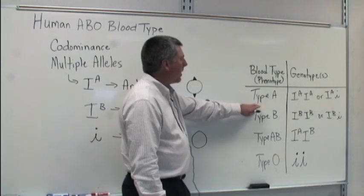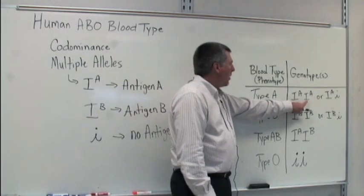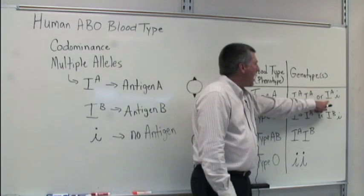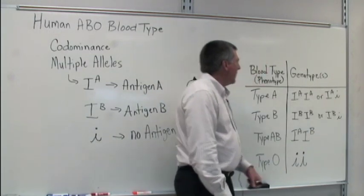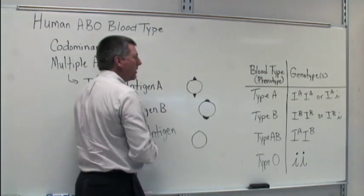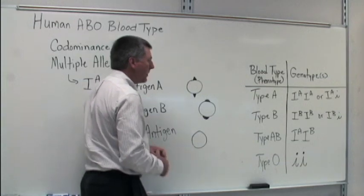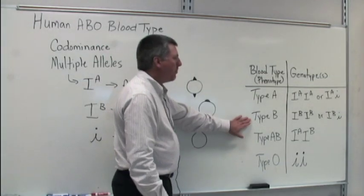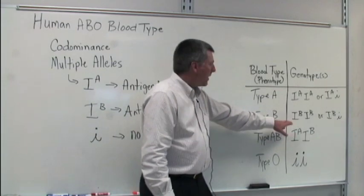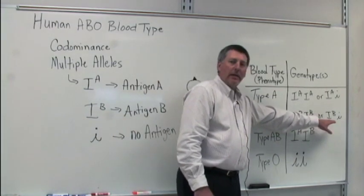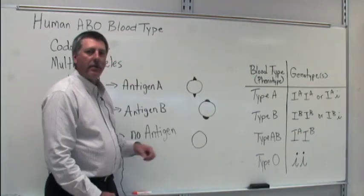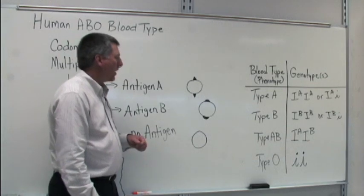Folks with type A blood could be homozygous IA IA, or they could be IA little i. In both situations, they have the A antigen on their red blood cells. People that have type B blood are either IB IB or IB little i. In both situations, they have the B antigen on the surface of their red blood cells.